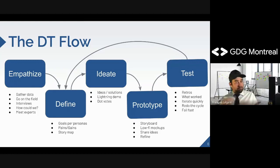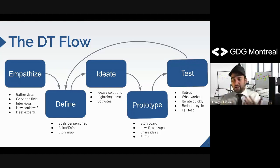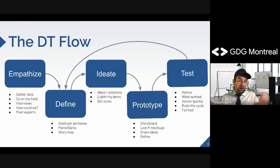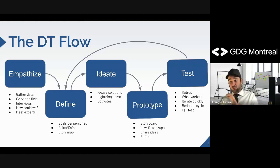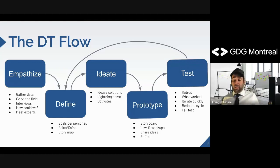Then we build a prototype — putting on paper or in digital format the ideas generated by the process. Finally, we test with end users. This is a critical part: we might all agree this is the best way to do something, but when the user actually uses the paper or digital prototype, we'll know if it fits their needs or reality. If it doesn't fit, we go back to the define phase and redo the process based on what we've learned. The key here is to fail fast.